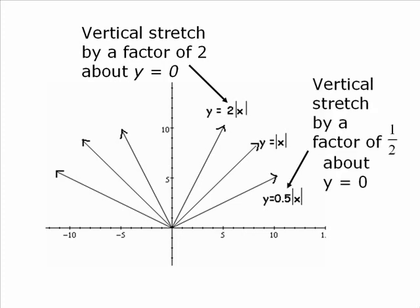And then the other graph at the bottom, y is equal to 0.5 or 1 half absolute value of x. Relative to the original curve, we have a vertical stretch by a factor of 1 half about y is equal to 0 or the x-axis. So this graph has been pulled closer to the x-axis.